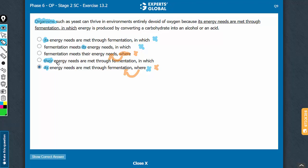Let's confirm answer choice D. Organisms such as yeast can thrive in environments entirely devoid of oxygen because their energy needs, as in the energy needs of such organisms,